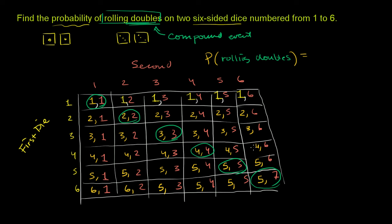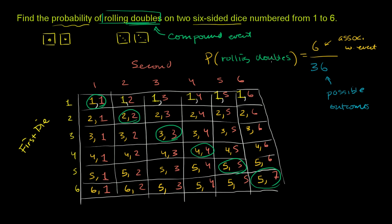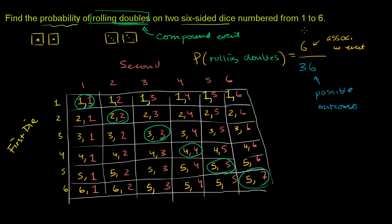So the probability of rolling doubles: how many of the possible outcomes are associated with this event? We count one, two, three, four, five, six — six outcomes associated with rolling doubles. And there are 36 total possible outcomes in the sample space. So the probability of rolling doubles is 6 over 36. We can simplify that fraction — both are divisible by 6 — giving us 1 over 6. So there's a one-sixth chance of rolling doubles, meaning one-sixth of all possibilities when rolling two dice result in doubles.